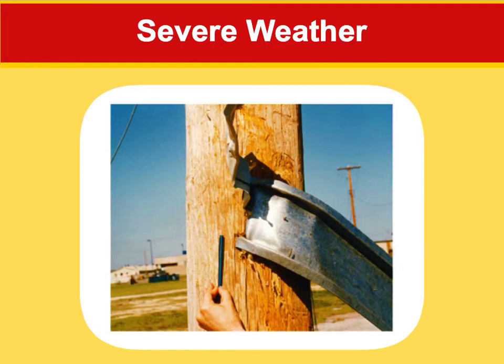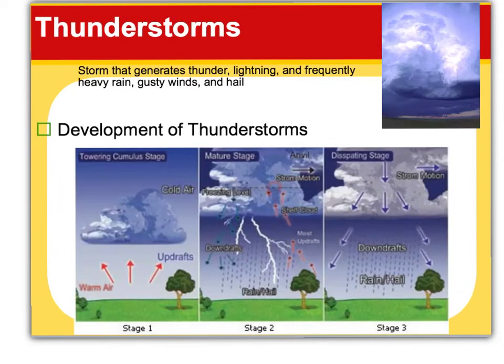Now everybody's favorite: severe or bad weather. We've got to start small, so we're going to start with thunderstorms. Thunderstorms produce thunder, lightning, lots of rain, gusty winds, and hail.